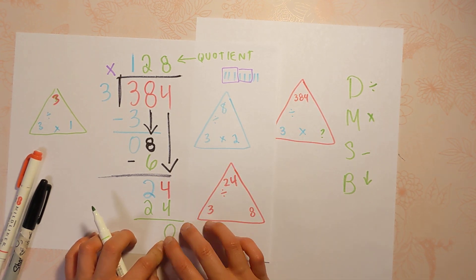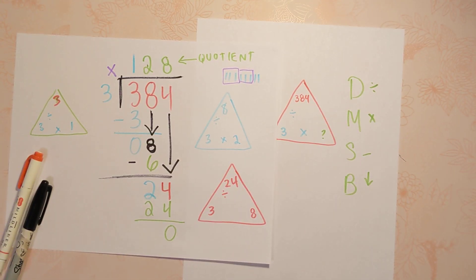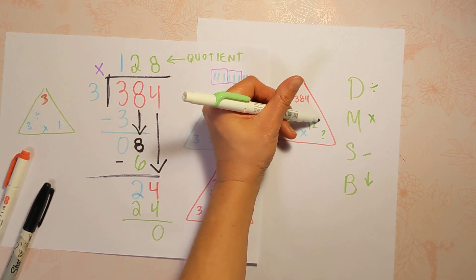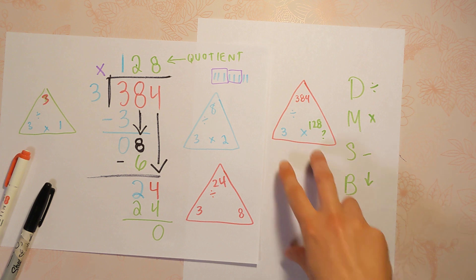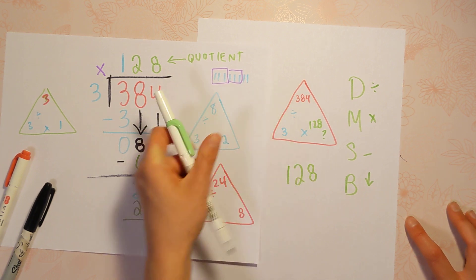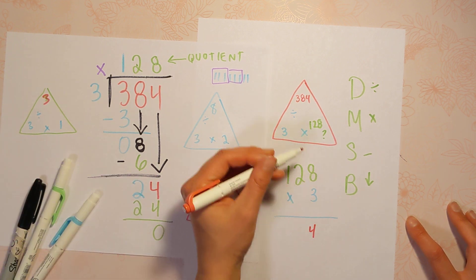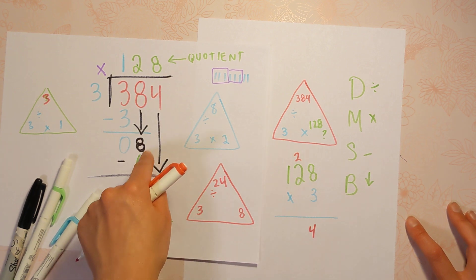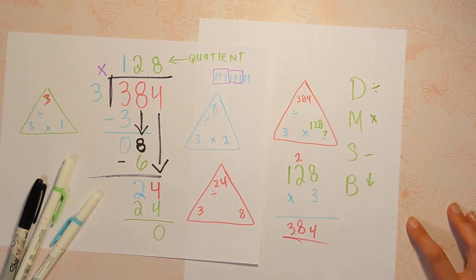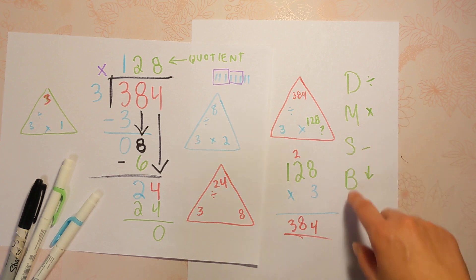If you had a remainder there would be something left, but this one worked out perfectly. Now I want you to check it with multiplication. If you were saying 384 divided by 3 equals 128 — that's what we claim — it is your responsibility to check that by multiplying. So if 384 divided by 3 is 128, therefore you're saying that 128 times 3 equals 384. Let's use the standard algorithm: 3 times 8 is 24, 3 times 2 is 6 plus 2 is 8, 3 times 1 is 3. Now you can check your answer. And that's how you multiply to check your answer — and this is how you divide using the standard algorithm with Does McDonald's Serve Burgers.